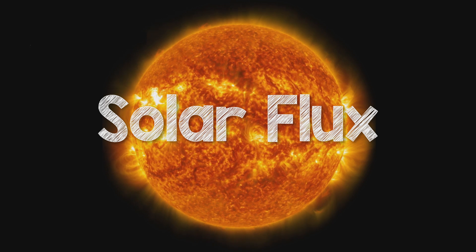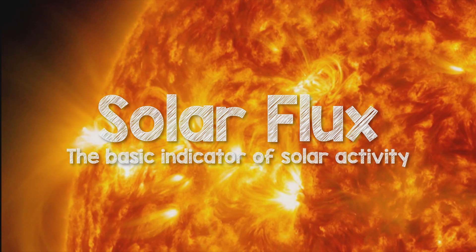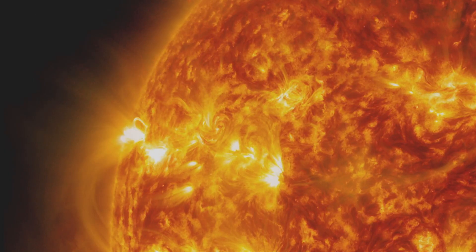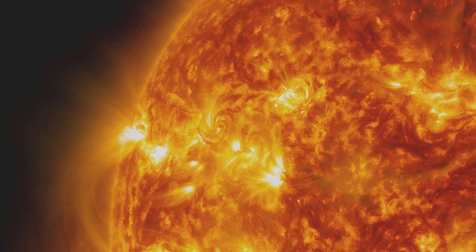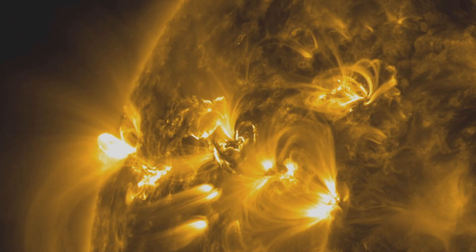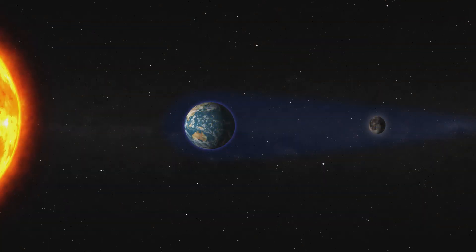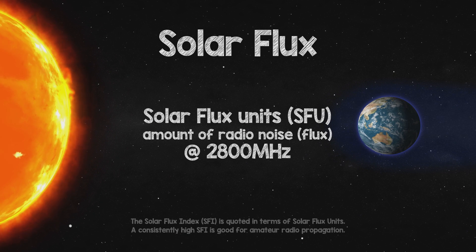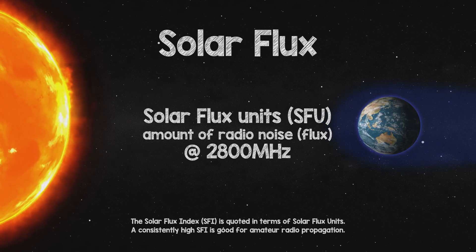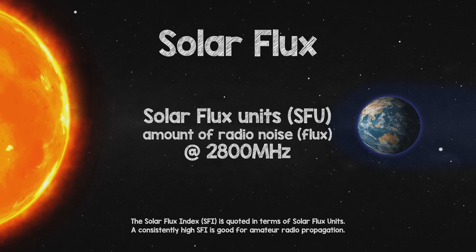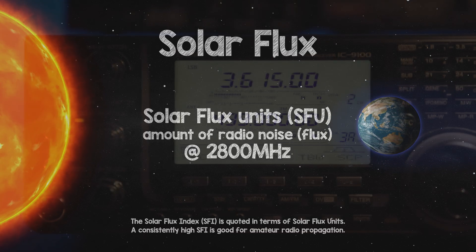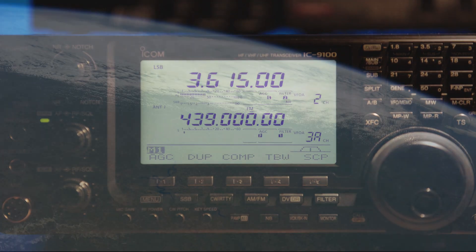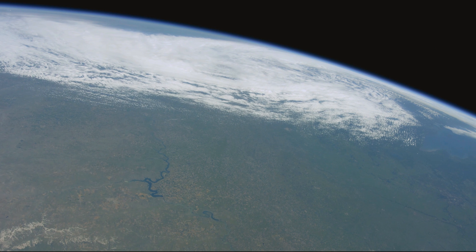A measure known as solar flux is used as the basic indicator of solar activity and to determine the level of radiation being received from the sun. The higher the solar flux, the better for amateur radio. The solar flux is measured in solar flux units and is the amount of radio noise, or flux, that is emitted at a frequency of 2800 megahertz. The solar flux is closely related to the amount of ionisation and hence the electron concentration in the F2 region.